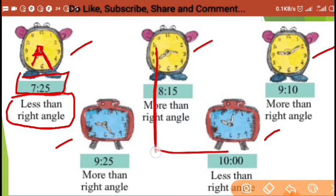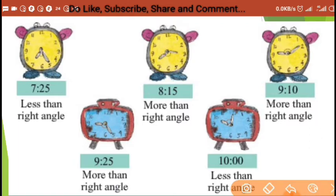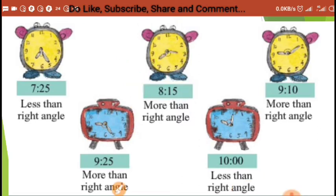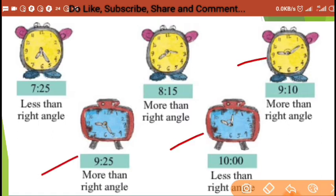For the second watch, the time is 8:15. This is the hour hand and this is the minute hand. The angle is on this side, and the angle is more than a right angle. In this way you can write in your copy, and for the next ones you can do it similarly.